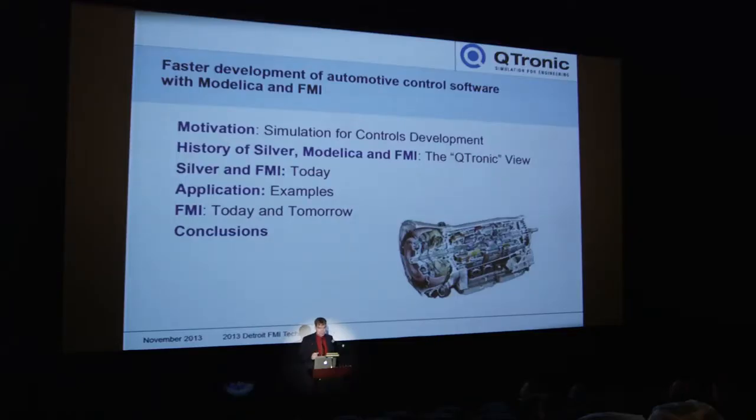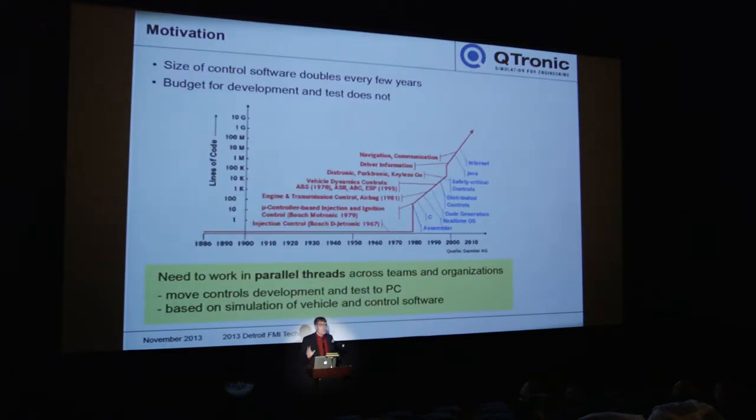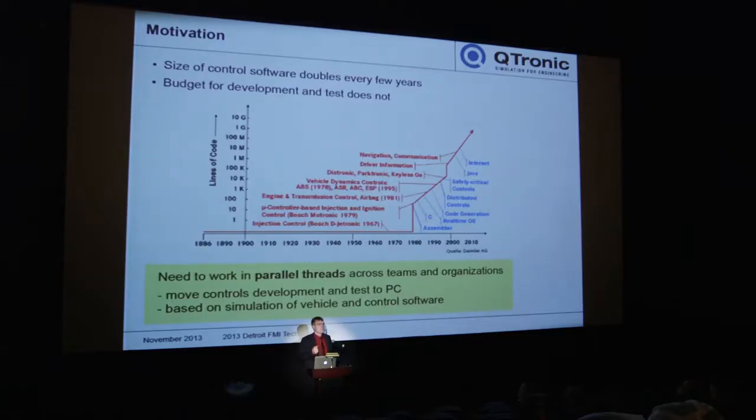What we have with 1.0 is already something that is widely used and accepted, and that's why I want to present some application examples. From the controls perspective, if you're developing controls in the automotive industry, you're faced with this exponential increase in complexity, and your budget is not increasing exponentially — it's not even increasing linearly. The only way to deal with this problem — we usually call it the test crisis — is good tools. And since we have been tied to tools in the past, the only way away from that is to tie yourself to standards instead of tools.